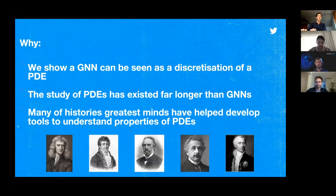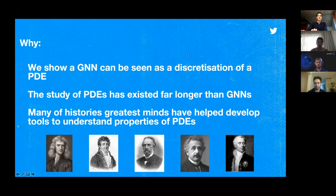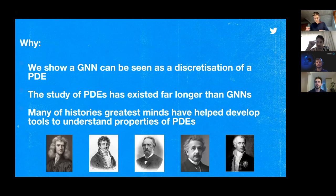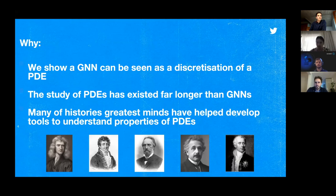Please jump in with questions at any time — we don't want this to be too formal. The first thing to cover is: why should anyone care about graph neural PDEs? It's important because graph neural networks have been blowing up recently, and in these two papers we show how a broad class of GNNs can be seen as discretizations of PDEs — specifically the diffusion PDE. PDEs have been around for quite a lot longer than GNNs, so we can draw on four or five hundred years of mathematical development.